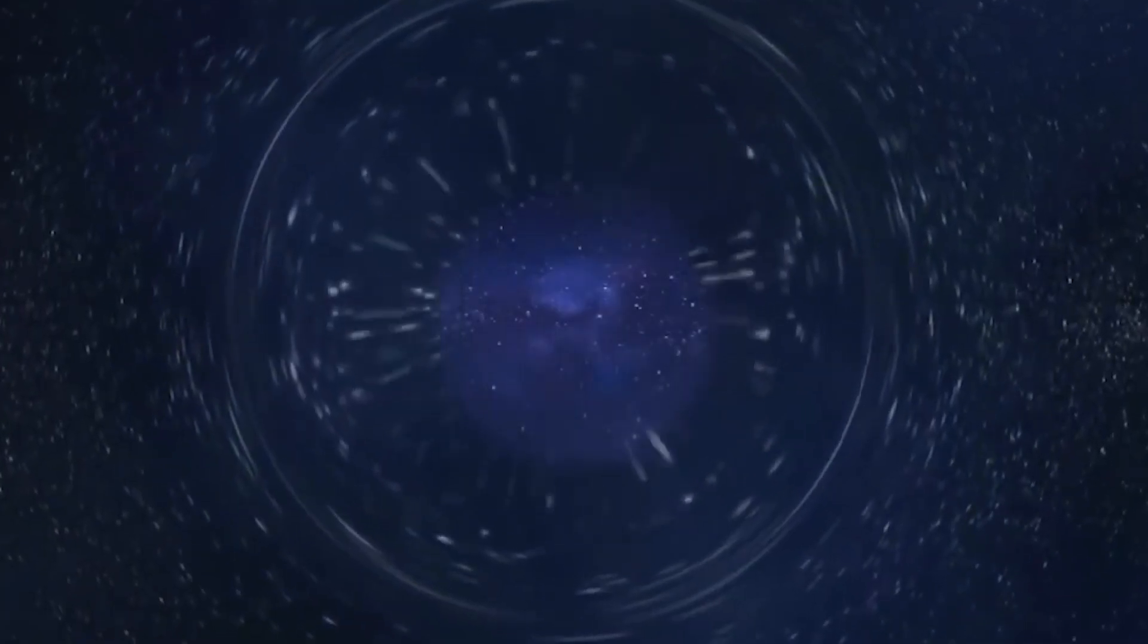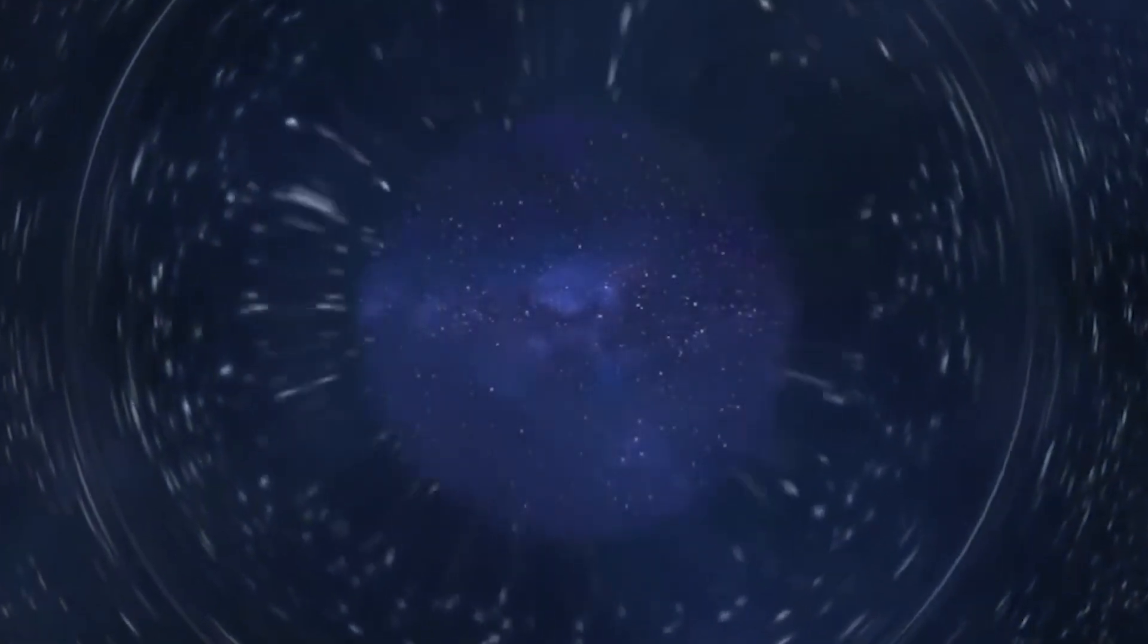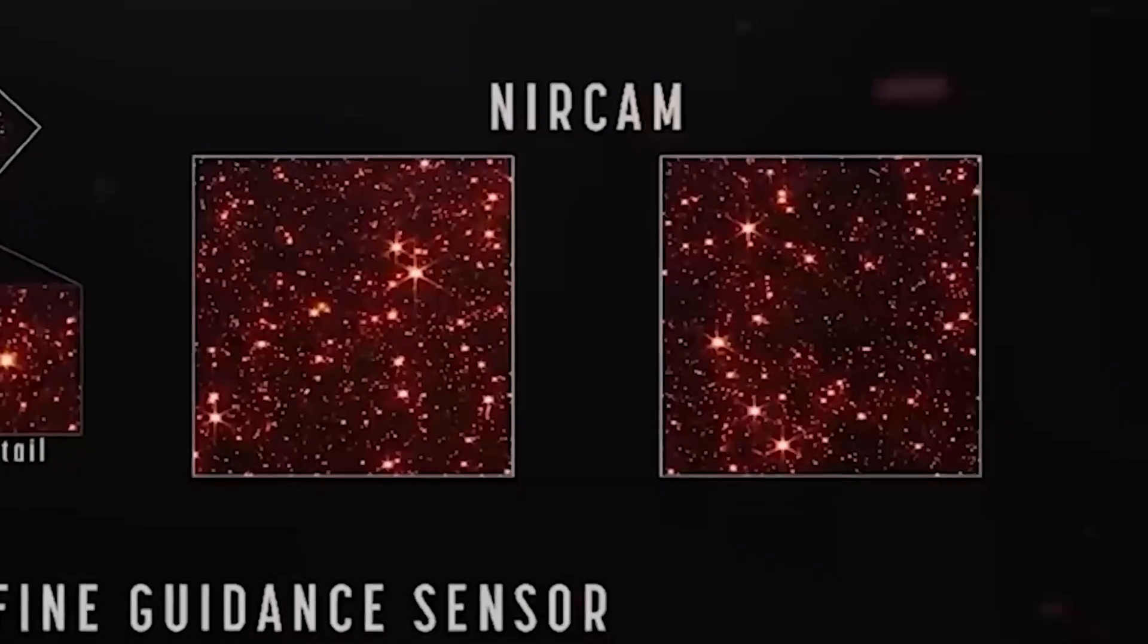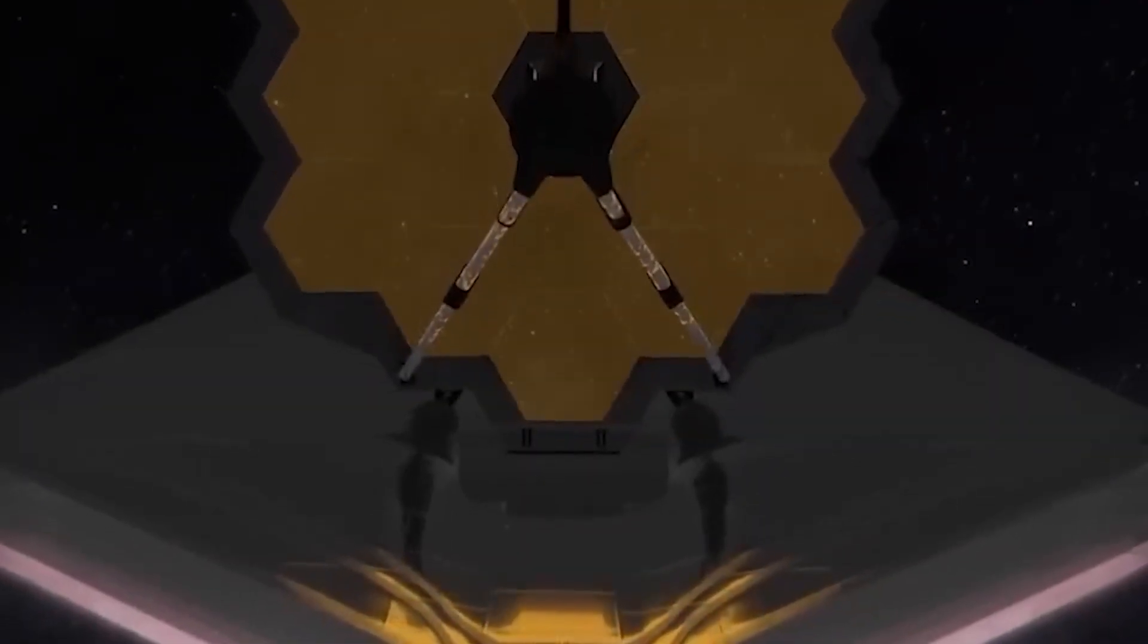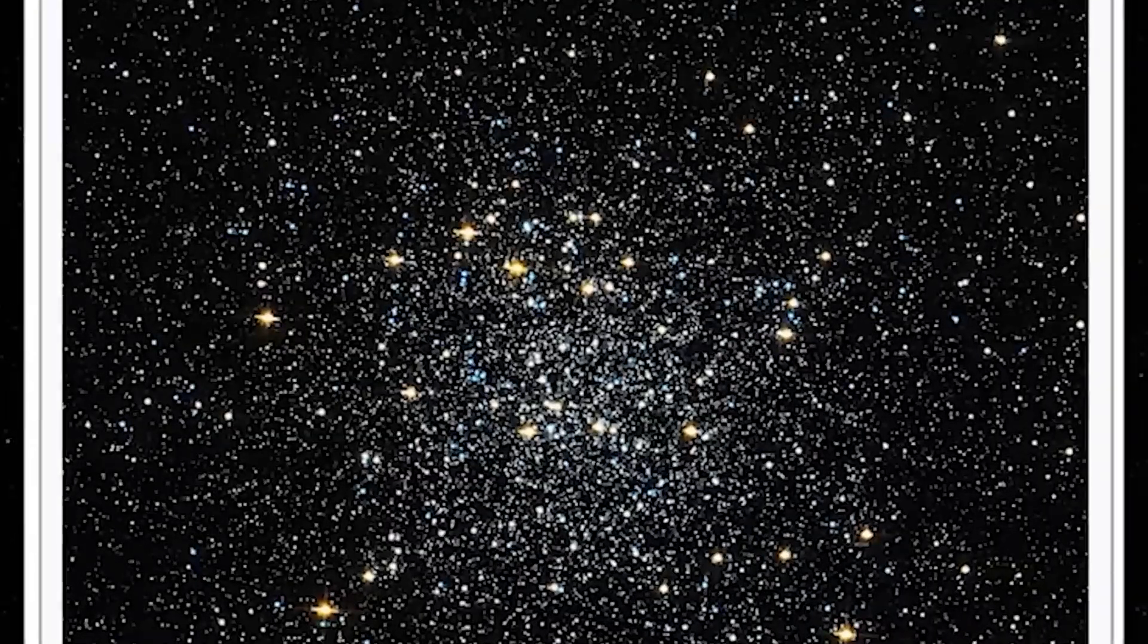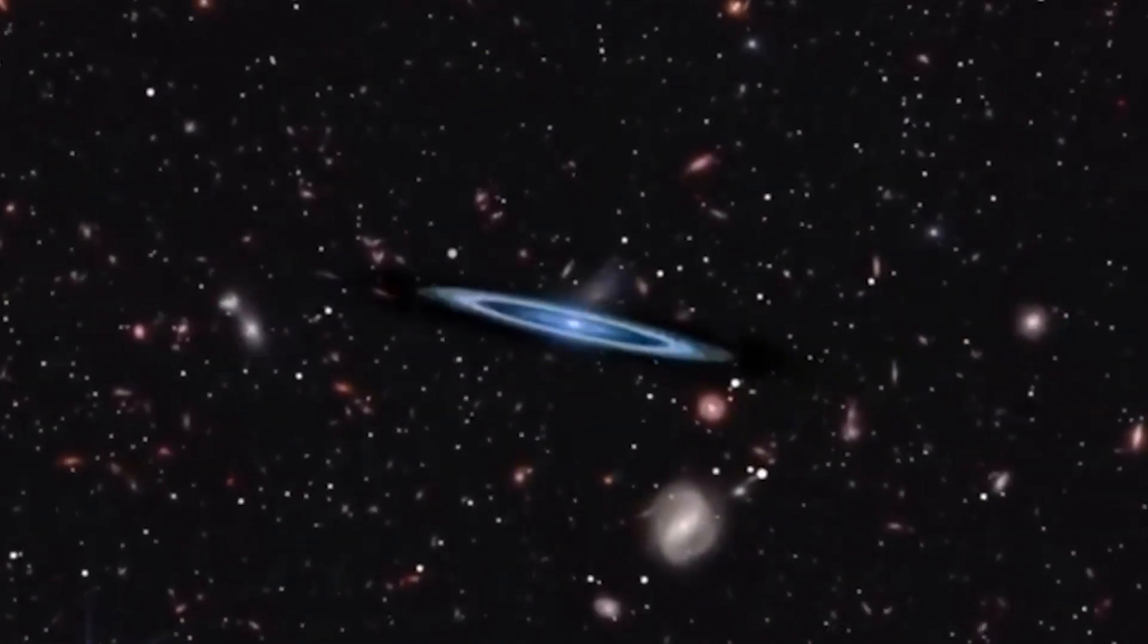At a quiet press room in Maryland, a group of astronomers gathered around a single image, an image that would shake cosmology to its core. The Webb Telescope, after months of scanning the oldest light in existence, had detected signals that should not exist.